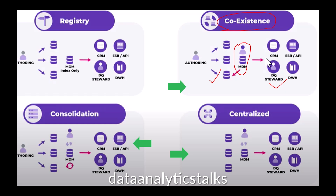In the centralized style, as the name suggests, master data entity is stored and managed solely within the MDM hub. Creation and updating of master data entities is only done via the MDM system. Source systems interact with the MDM system when they require master data records. It is a centralized way of doing things — every entity is created and added to the MDM, and whenever source or downstream systems require master data they retrieve it from the MDM. Unlike coexistence, there is no two-way approach — only one-way.